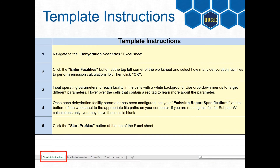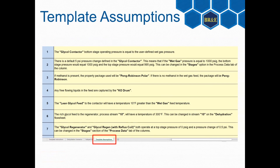There are four worksheets in the embedded Excel workbook. The first sheet contains the template instructions, which provides new users with a guide on how to use the tool. We also provide a list of dehydration tool assumptions to give users transparency on how other model inputs have been configured. The assumptions list shows where these values can be altered in the Pro Max simulation if desired.